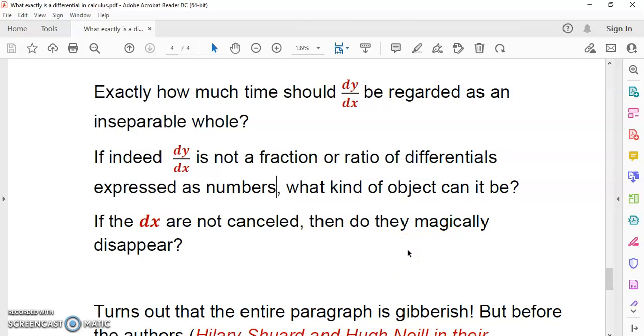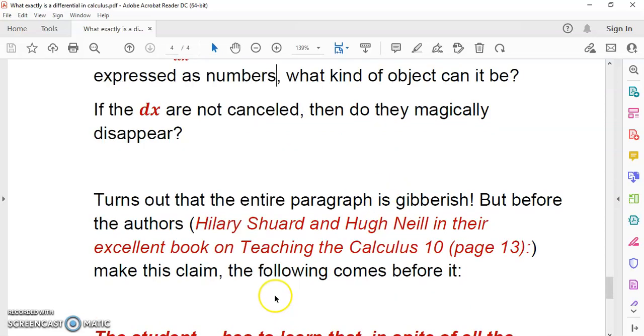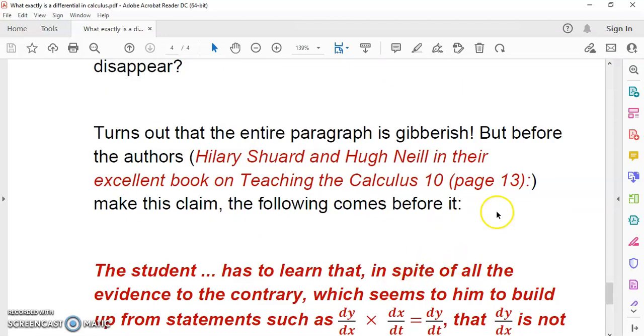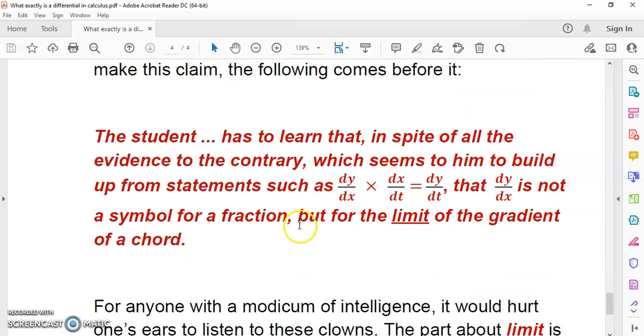What kind of object can it be? If the dx are not cancelled, do they magically disappear? Oh, it makes my blood boil to reach such utter garbage. It turns out that the entire paragraph is gibberish. But before the authors make this claim, the following comes before it.